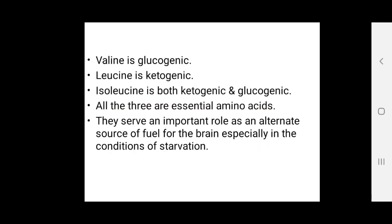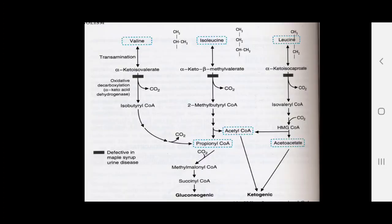Branched-chain amino acids: valine is glucogenic, leucine is ketogenic, and isoleucine is both ketogenic and glucogenic; all three are essential amino acids. They serve as an alternate fuel source for the brain, especially during starvation. In metabolism: from valine, transamination forms alpha-keto isovalerate; from isoleucine, alpha-keto-beta-methylvalerate; and from leucine, alpha-keto isocaproate.